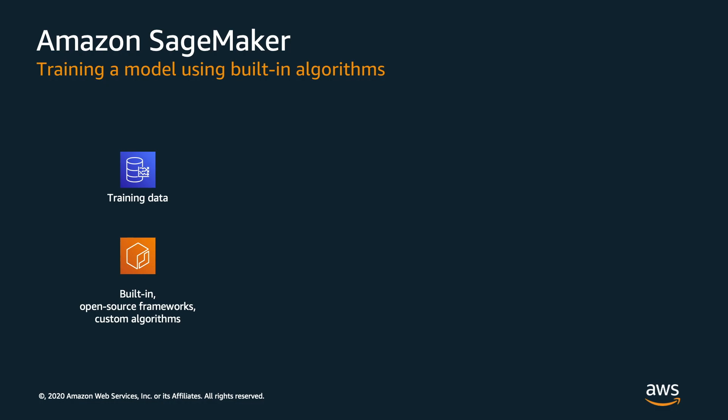SageMaker provides several built-in machine learning algorithms that you can use for a variety of problem types. You can also bring your own algorithm or use your code to access popular ML frameworks to build models. In our exercise, we will use a built-in random cut forest algorithm to detect anomalous data points in our dataset.